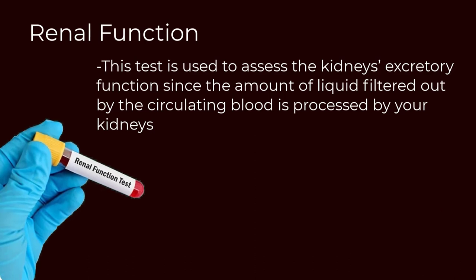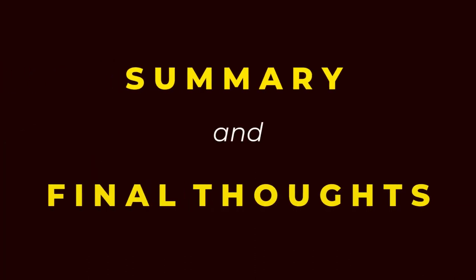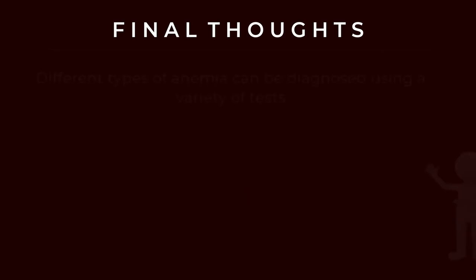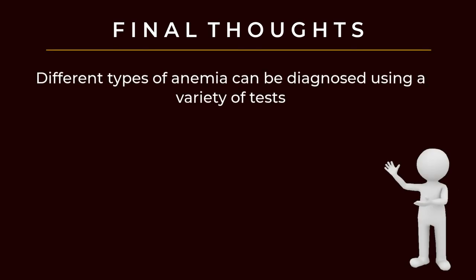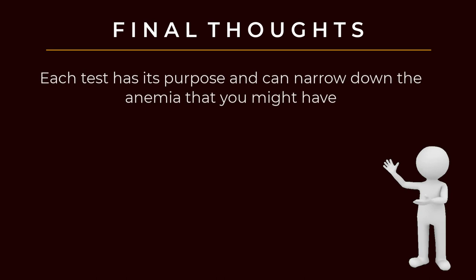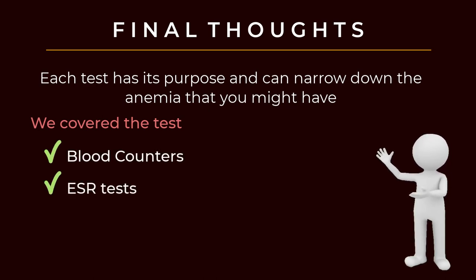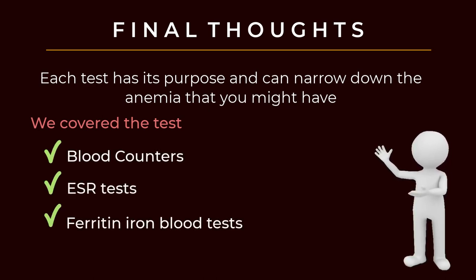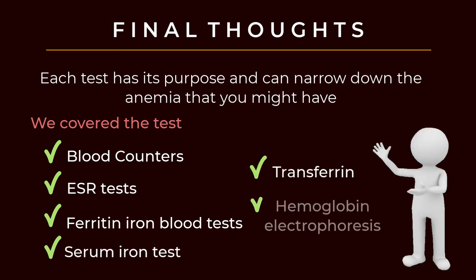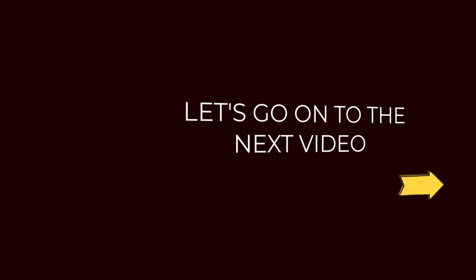In summary, different types of anemia can be diagnosed using a variety of tests, each with its own purpose in narrowing down the type of anemia. The tests covered include blood counters, ESR tests, ferritin iron blood tests, serum iron tests, transferrin, and hemoglobin electrophoresis.